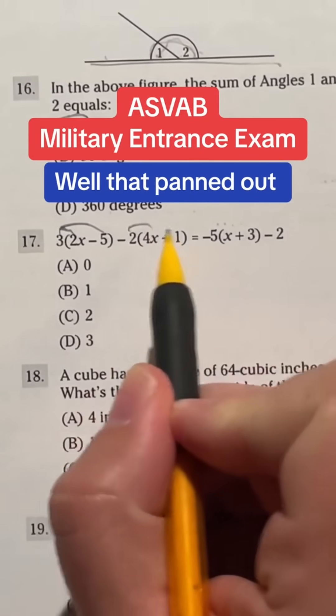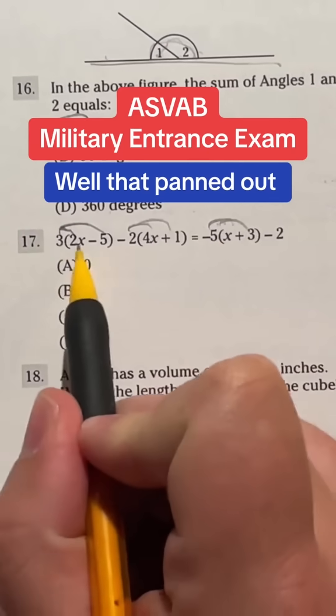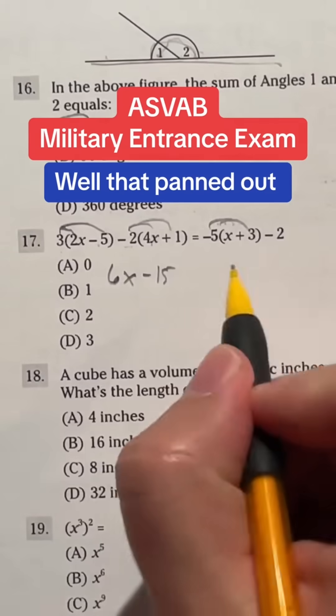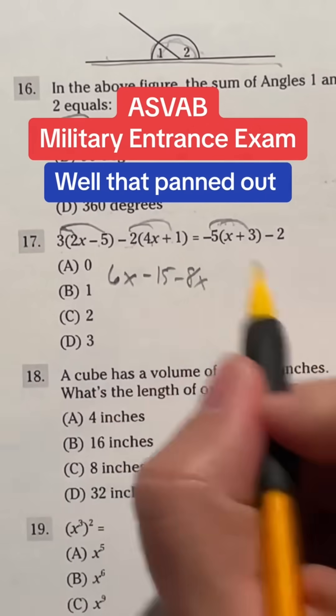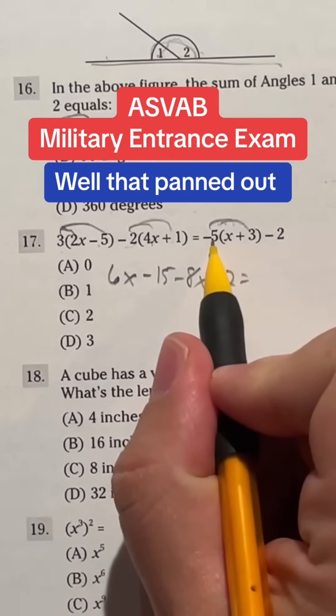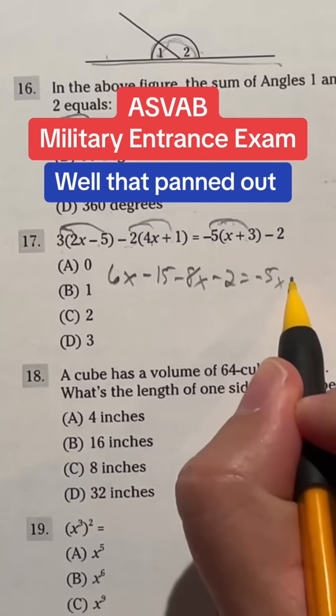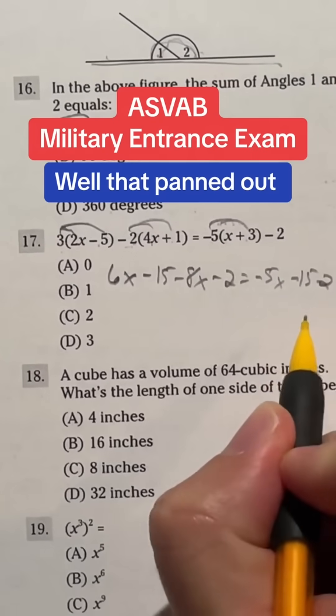Let's start by distributing all these things. So starting off, three times two is gonna give me 6X. Three times negative five is gonna give me negative 15. We got this negative two times four is gonna give me negative 8X. And I got negative two times one which is gonna give me negative two. On this side, negative five times X is gonna give me negative 5X. And negative five times three is gonna give me negative 15. And we still got that negative two squeezing on the end there.